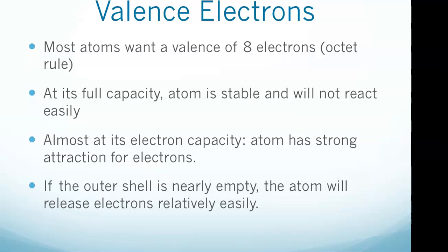If the outer shell of an atom is almost at its electron capacity, the atom will have a strong attraction for electrons in order to fill that orbital. However, if the outer shell is nearly empty, the atom will release electrons relatively easily.